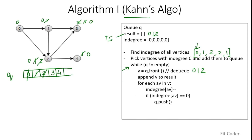We again enter the while loop. The front of the queue is 3, so we append it to the result. Vertex 3 has no adjacent vertices. We loop again — the front is now 4, we dequeue it and append it to the result. The topological sort we obtained is 0, 1, 2, 3, 4.